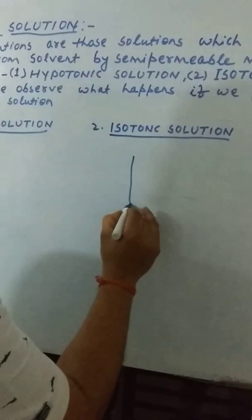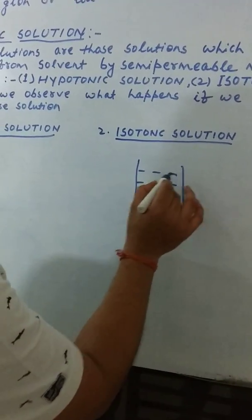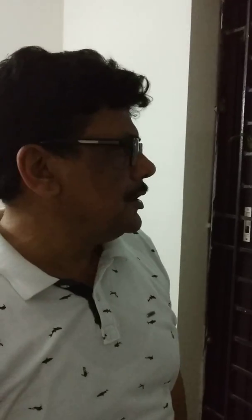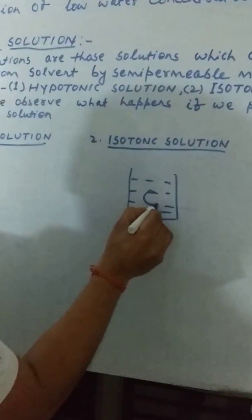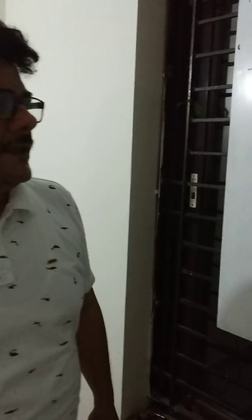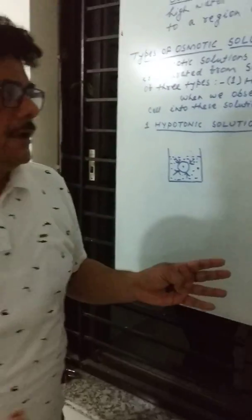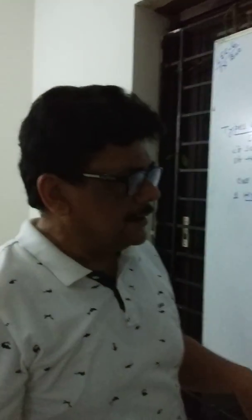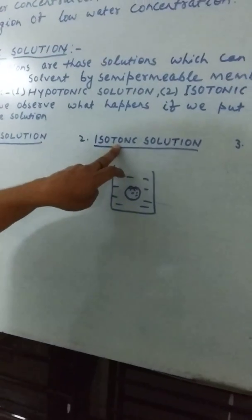The second is isotonic solution. We take a beaker with a solution whose concentration is the same as the concentration inside the living cell. Here there will be no net movement of water molecules either inside or outside, and there will be no effect on the cell. Such a solution is called an isotonic solution.